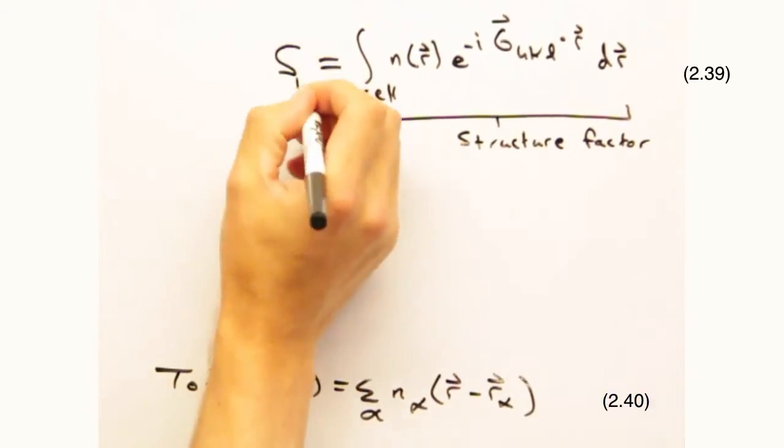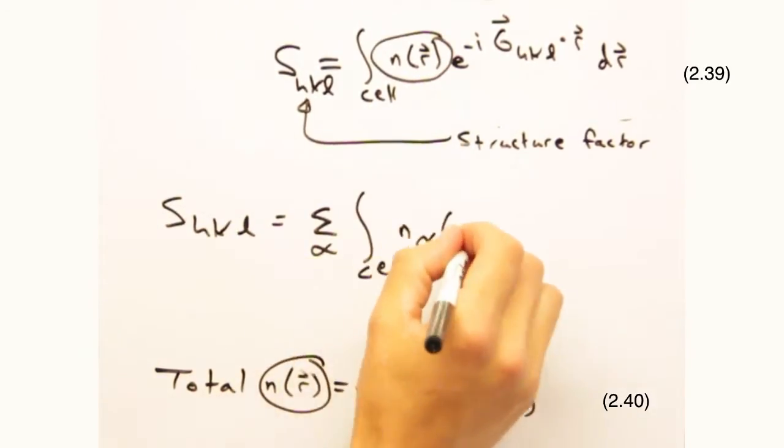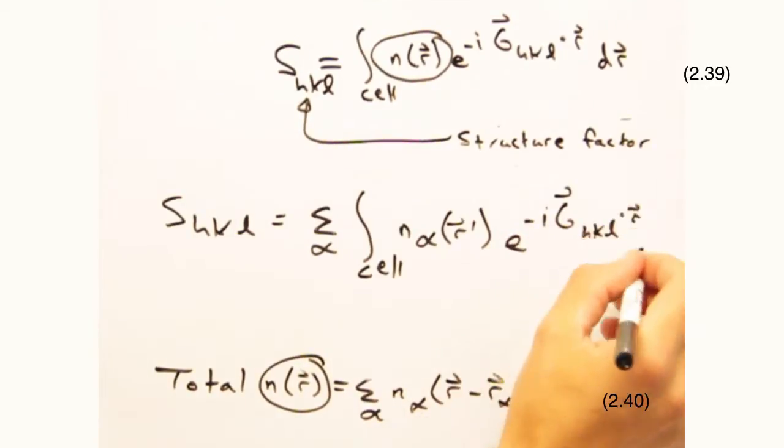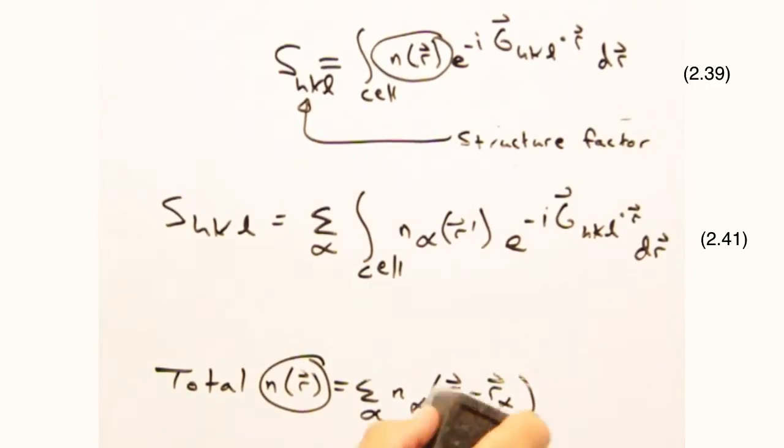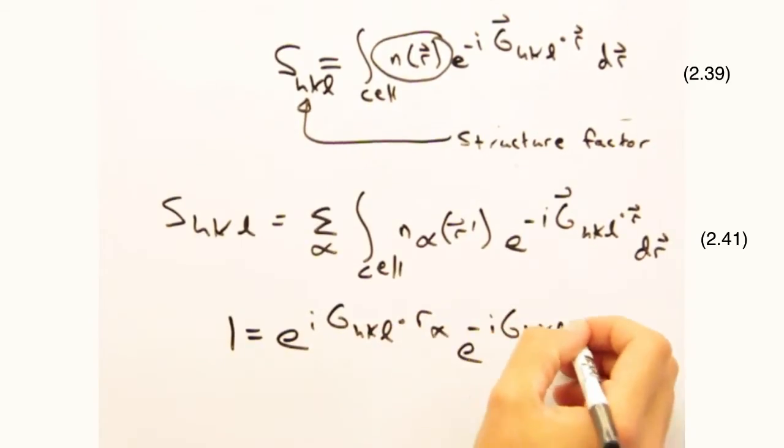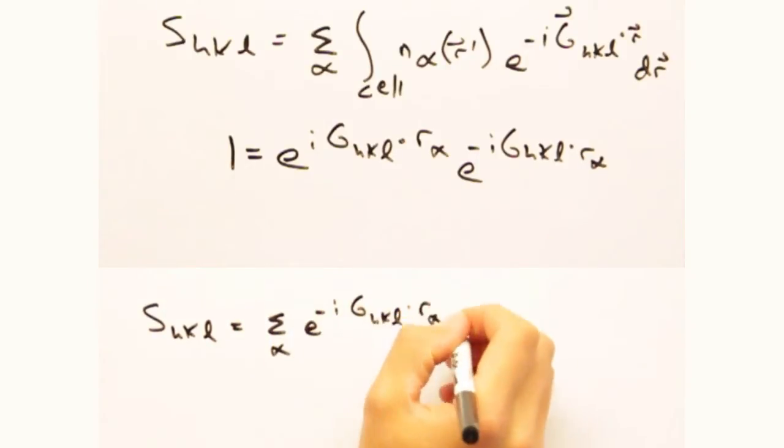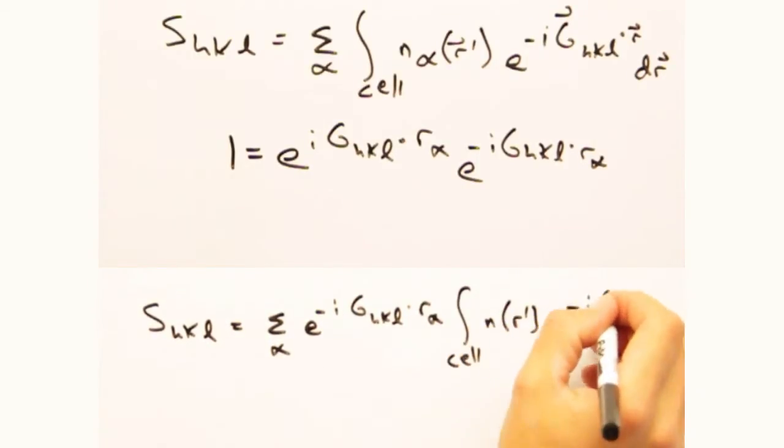Let's first rewrite the structure factor equation. Now, let's put our new n of r back into this equation and effectively multiply by one. Why would we want to do that? I know it's not inherently obvious, but what it allows us to do is separate the terms in the structure factor equation into two general categories.